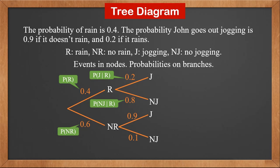Similarly, we draw out two branches from NR to J and NJ. Put 0.9 on the branch from NR to J, and 0.1 on the branch from NR to NJ.